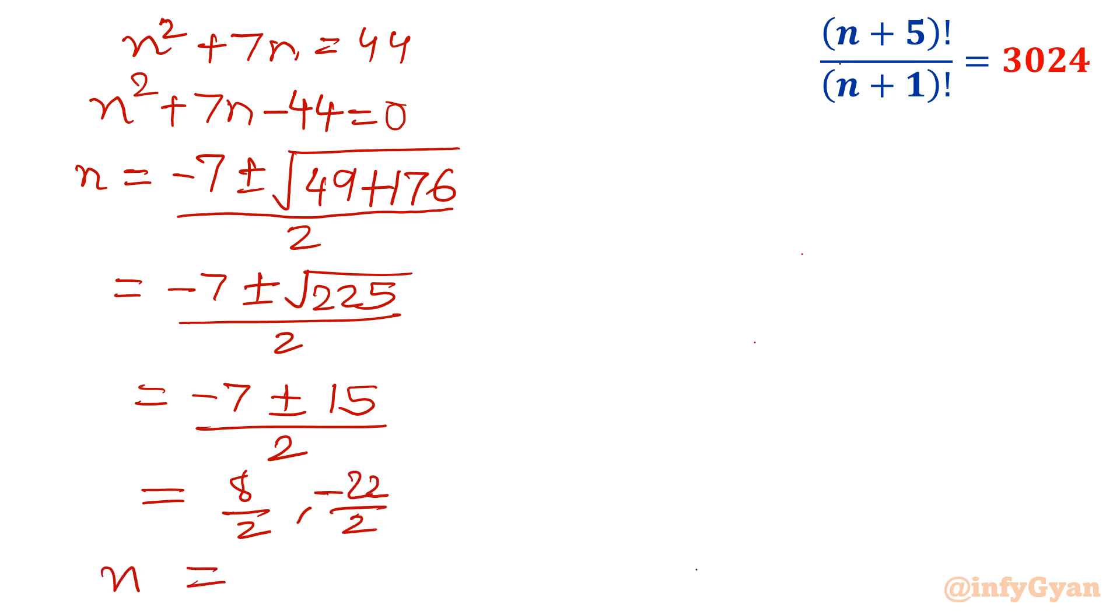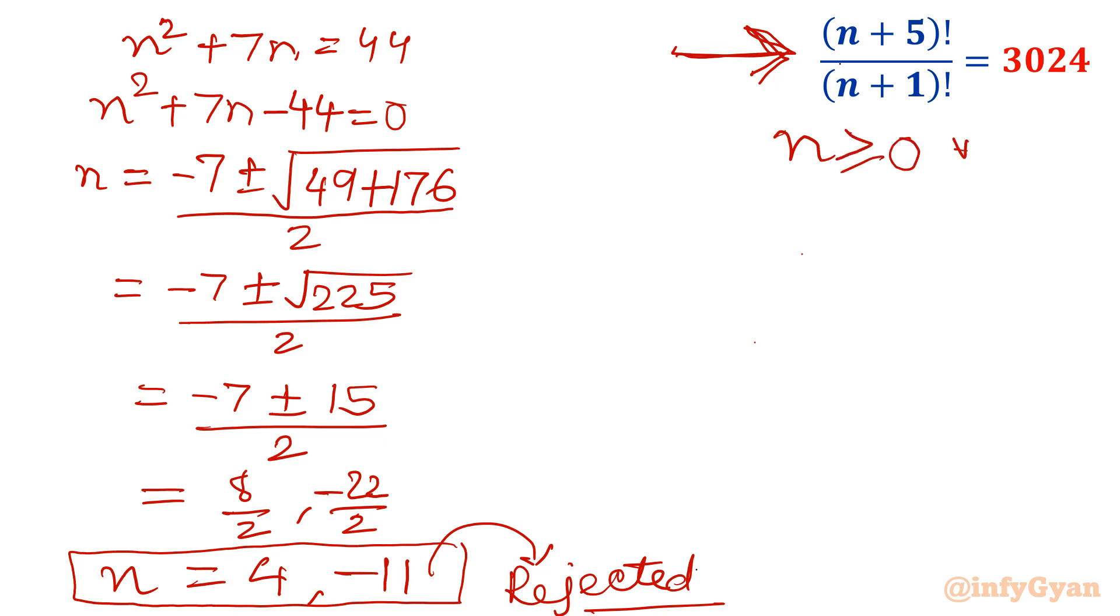So there are two values of n: 4 and negative 11. We will reject negative 11. Why? Because once I put n = -11 here in this equation, our original equation, then this factorial will convert into a negative value. Negative 6 factorial over negative 10 factorial. That is not acceptable, because we know that n should be greater than or equal to 0 for every integer value. So now n = 4 is our solution.